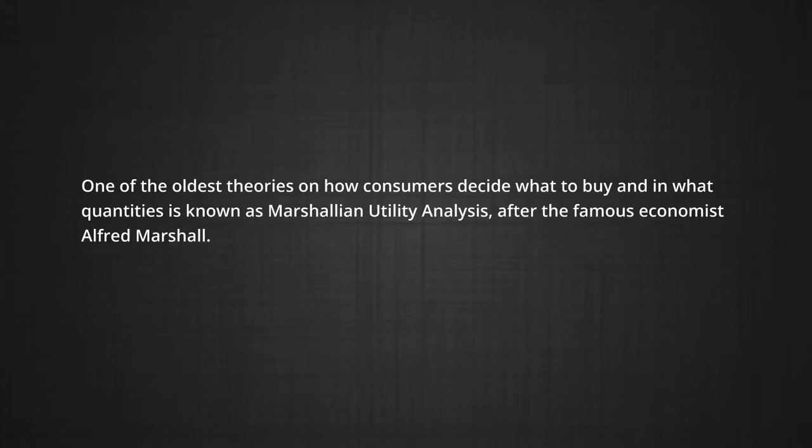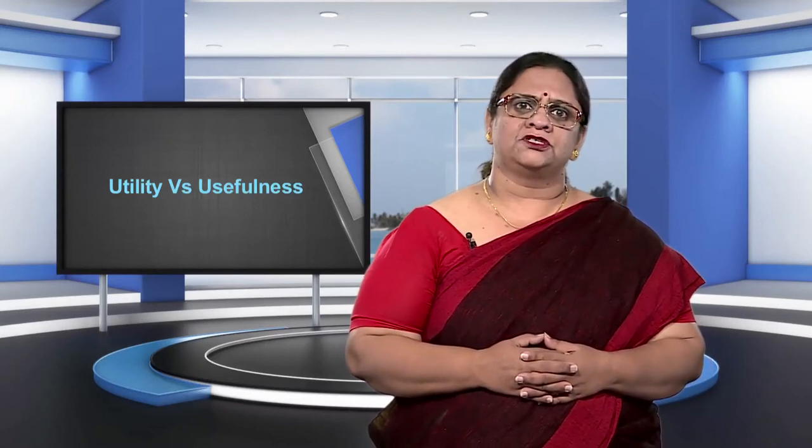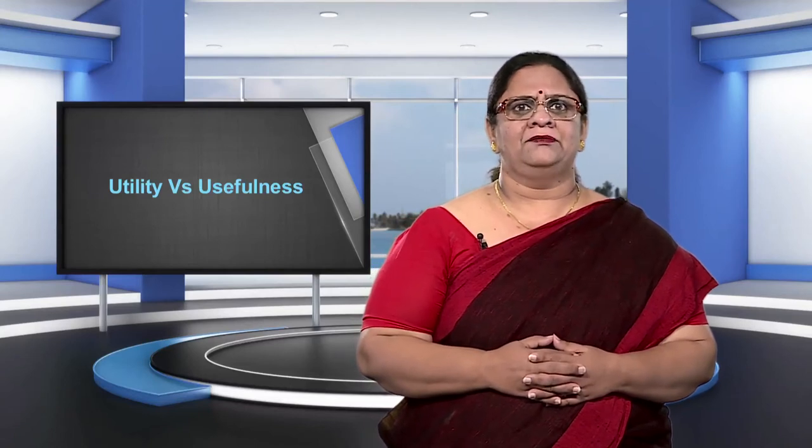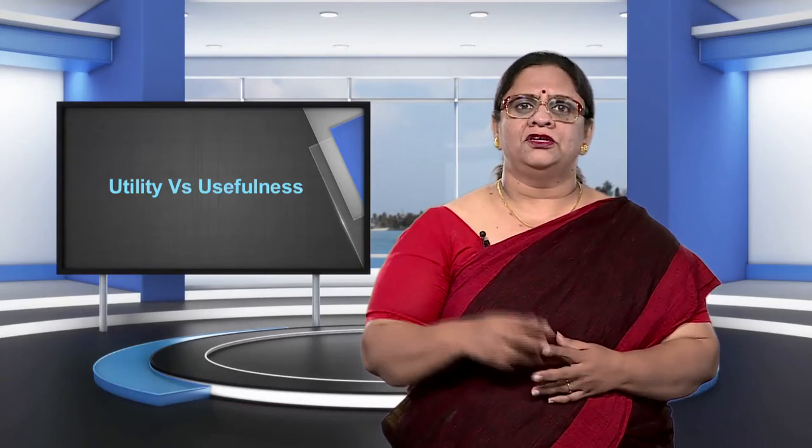One of the oldest theories on how consumers decide what to buy and in what quantities is called the Marshallian utility analysis, after the famous economist Alfred Marshall. Marshallian utility analysis assumes that a consumer wants to get the maximum possible satisfaction from consuming various commodities that they can buy.